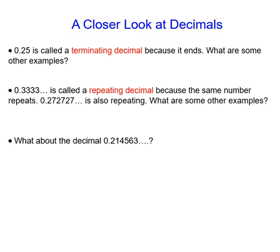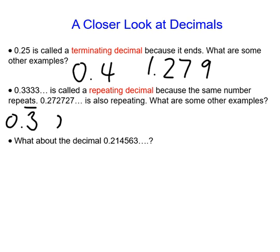Maybe you came up with things like 0.4 or 1.279 - those both end, so they're terminating. 0.333333 is called a repeating decimal because the same number repeats. Another example is 0.272727. For your interest, another way of writing those is 0.3 with a bar above the three, or 0.27 with a bar above the two and seven. Take a second to think about what some other examples of repeating decimals are.